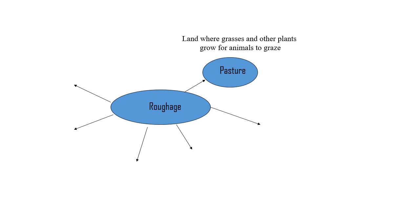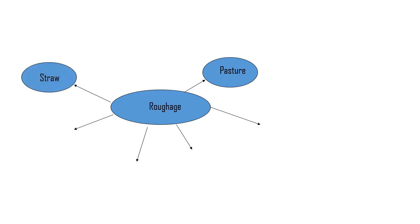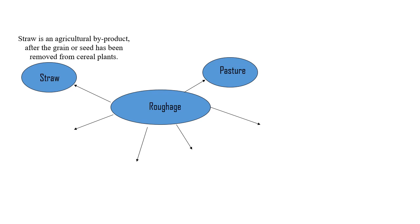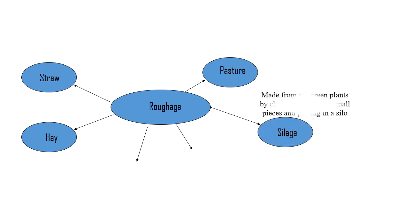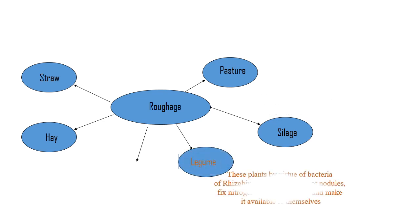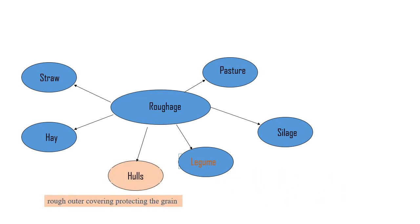These are key definitions related to this topic. Pasture is land where grasses and other plants grow for animals to graze. Straw is an agricultural byproduct or crop residue after the grain or seed has been removed from cereal plants. Hay is a sun-cured fodder made from leaves and stems of plants that have been cut and dried. Silage is pickled green fodder made from cut green plants by chopping them into small pieces and placing them in a silo. Legumes are plants whose roots contain bacteria — Rhizobium — that fix atmospheric nitrogen, improving the nitrogen content of the plant. Hull is the outer covering of a seed that protects the grain.